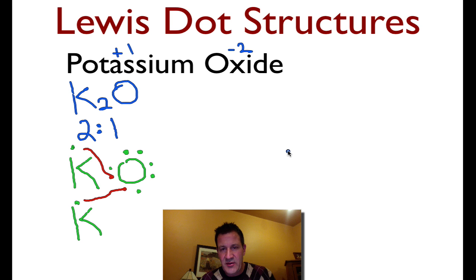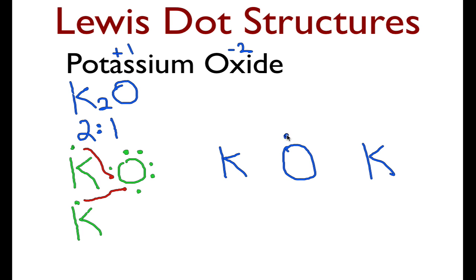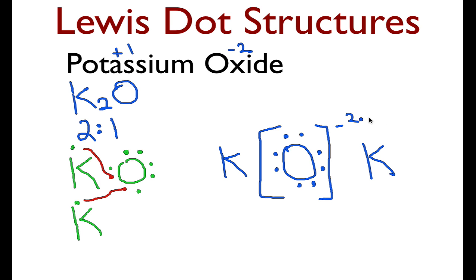Let's go through and draw the actual Lewis structure for that compound. We're going to draw the oxygen in the middle and put the potassium on either side — our ratio two to one. We ask ourselves, what's going to gain the valence shell electrons? That's the oxygen, so we show the gainer with a full outer shell. We draw brackets around it to show that it has possession of those electrons. We put the charge minus two, the charge on each potassium is plus one, and that is the Lewis structure for potassium oxide. Plus one, plus one, minus two equals zero — the overall charge on the ionic unit is zero.